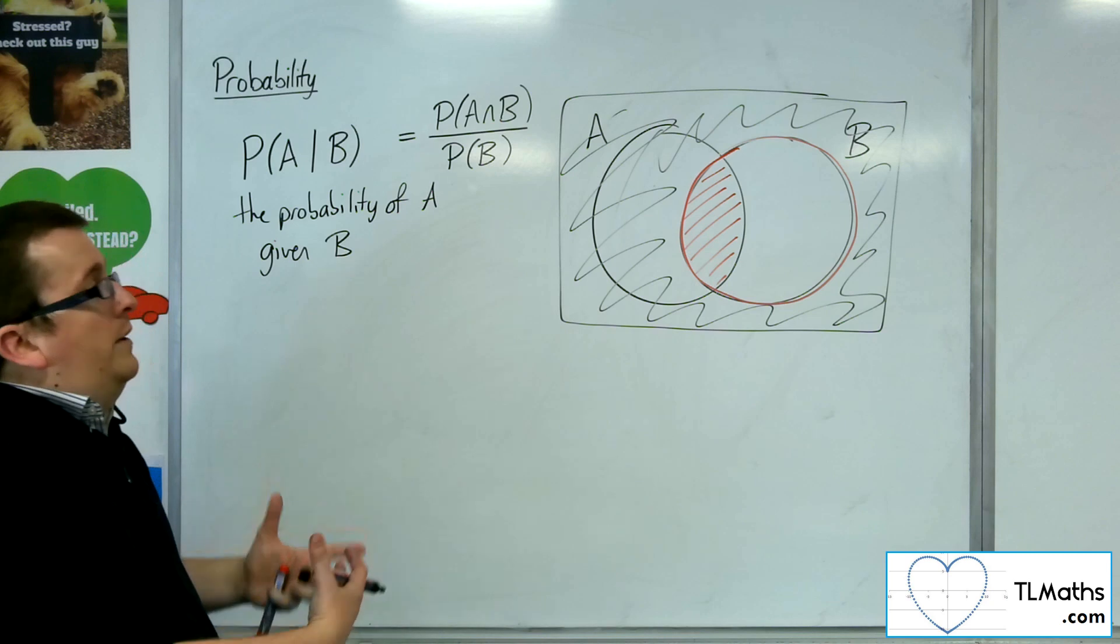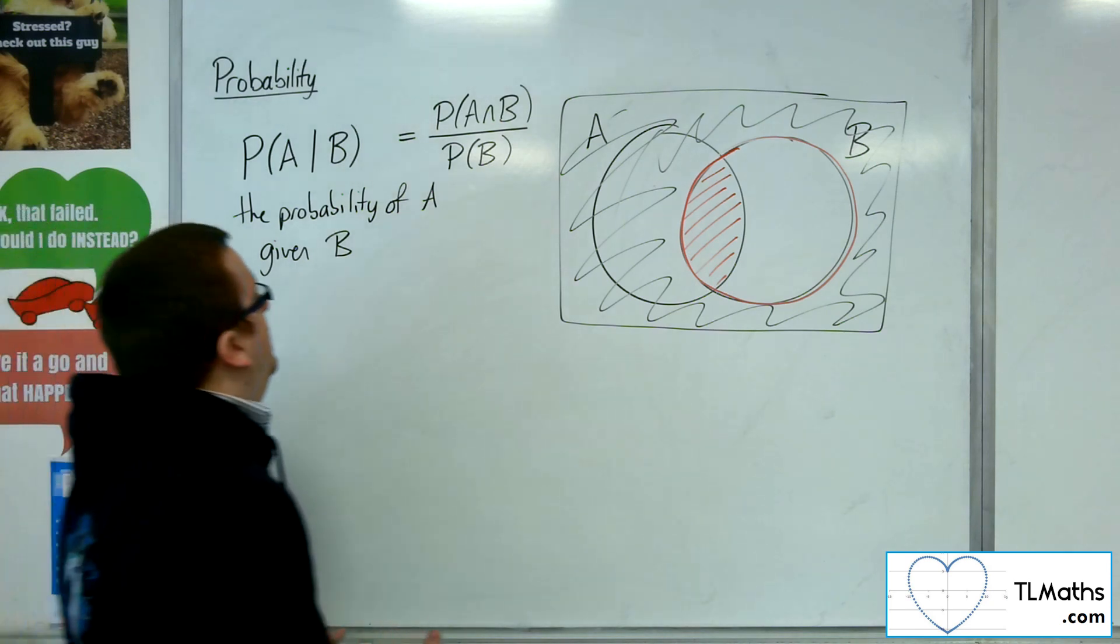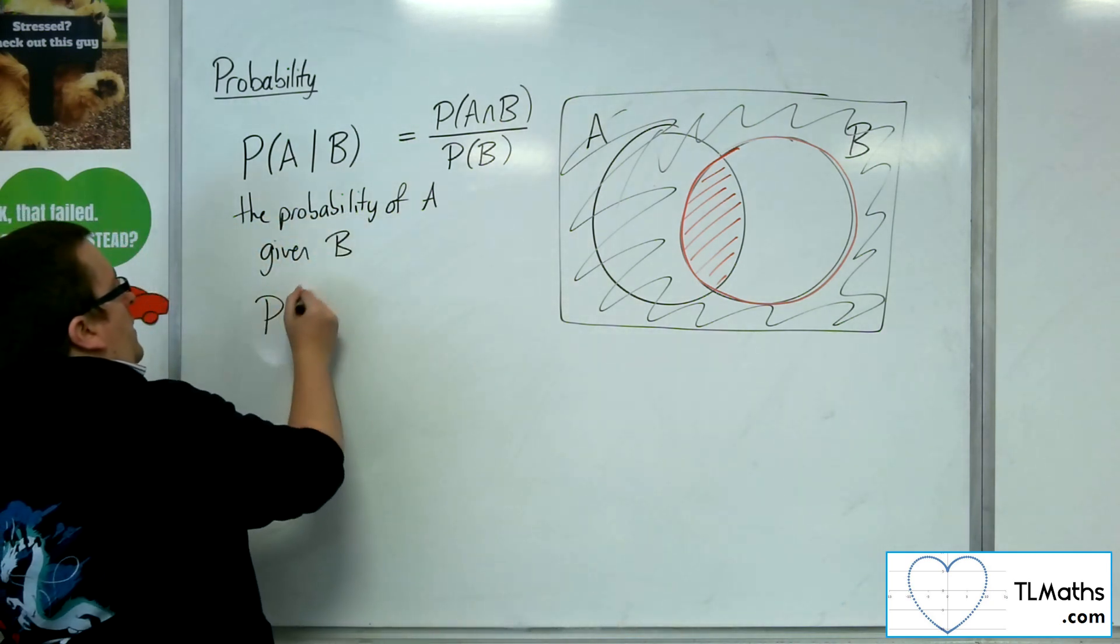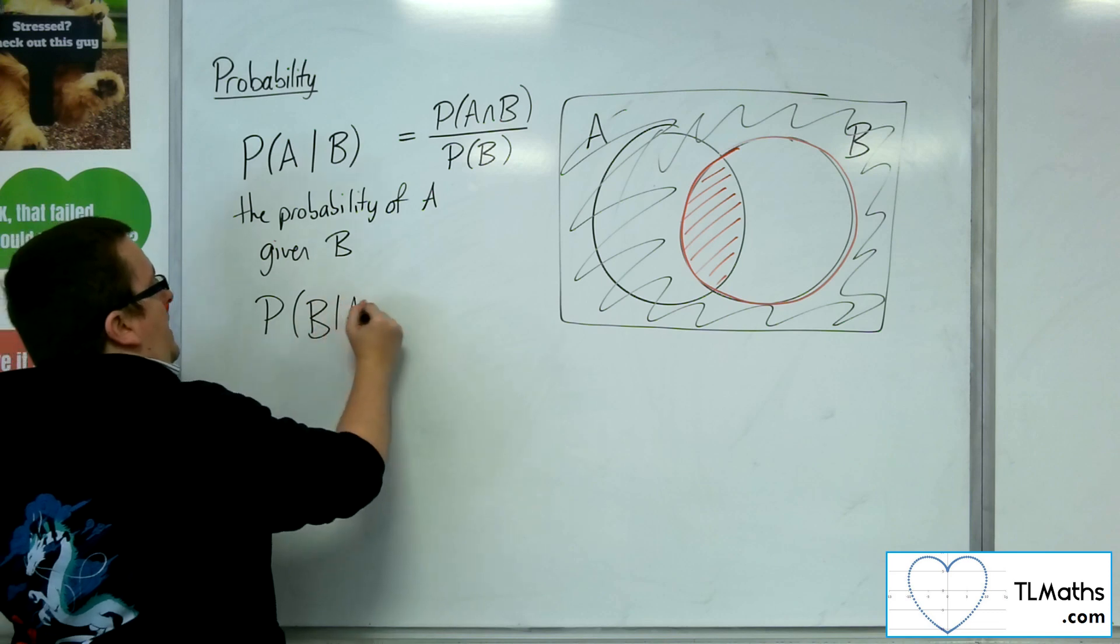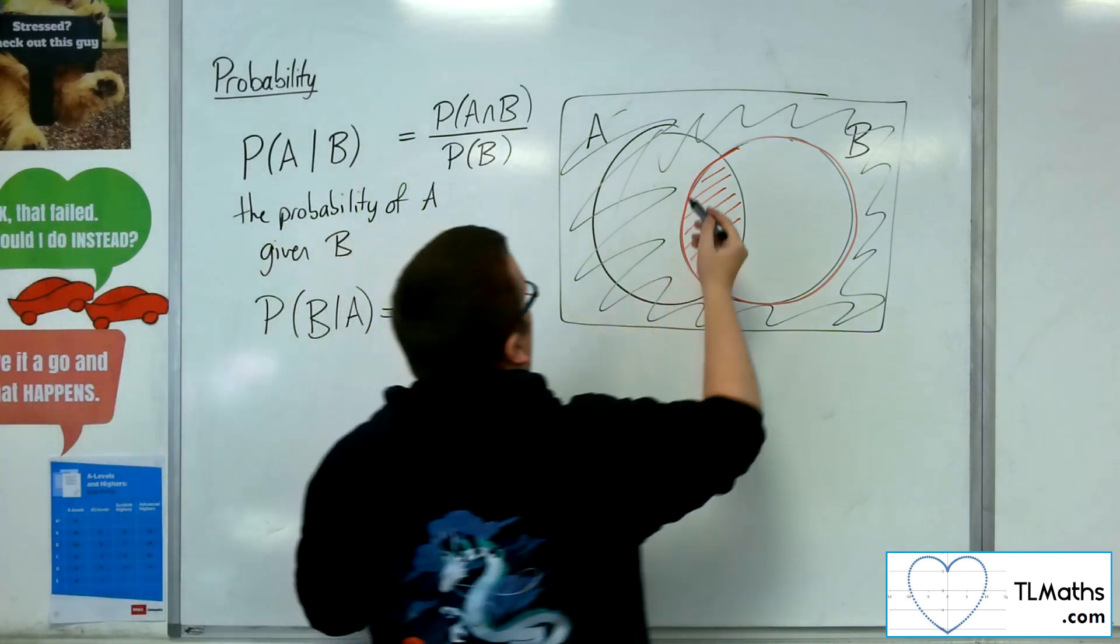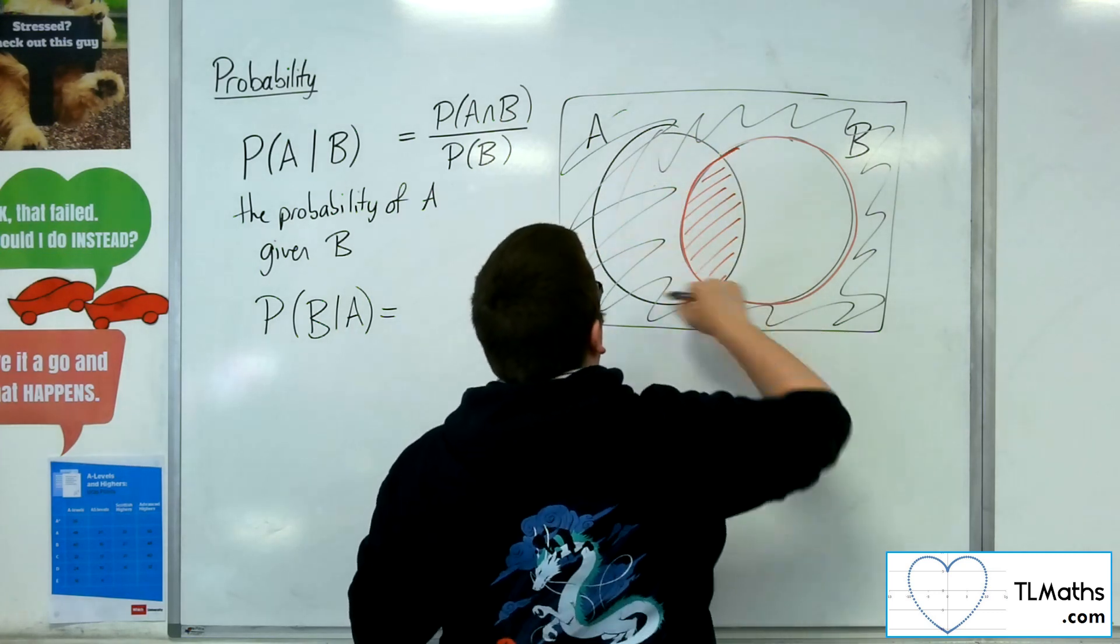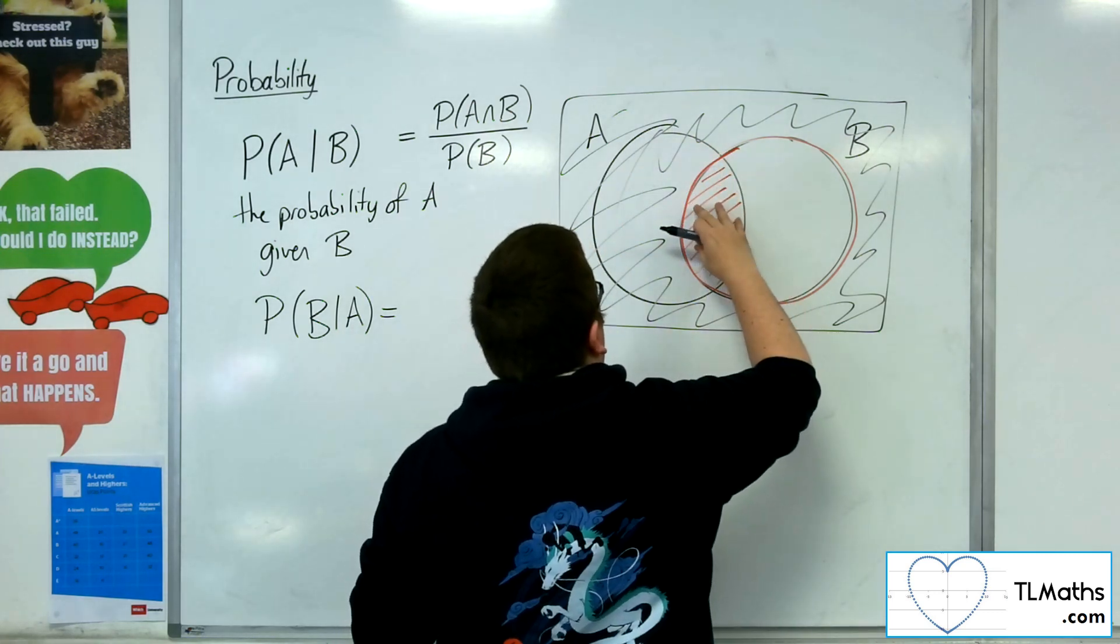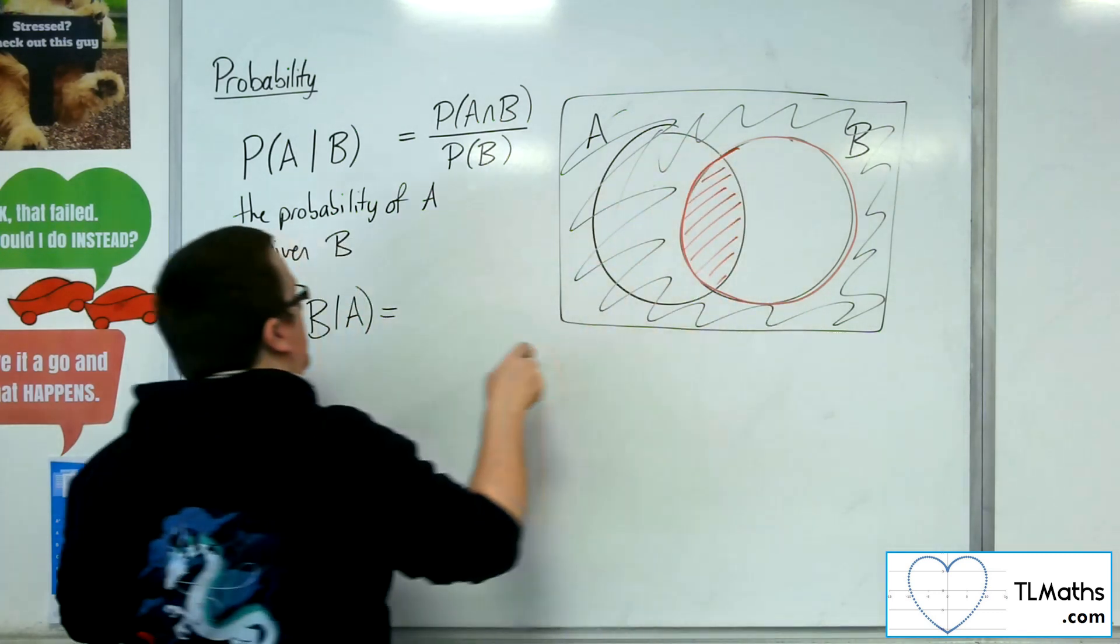Now, likewise, you can reorganise that, and you can say that the probability of B given A, well, that would be equal to, so if you're just looking at A, it's the intersection divided by the probability of A.